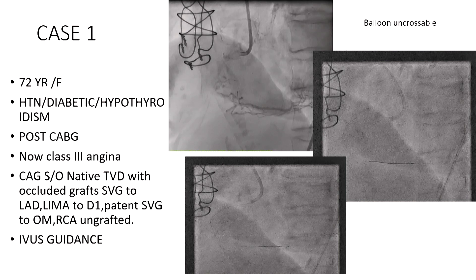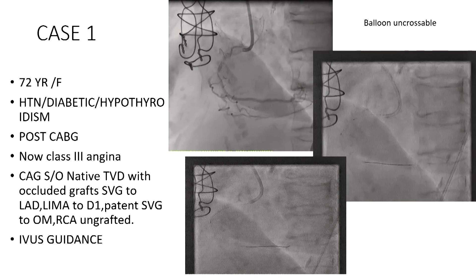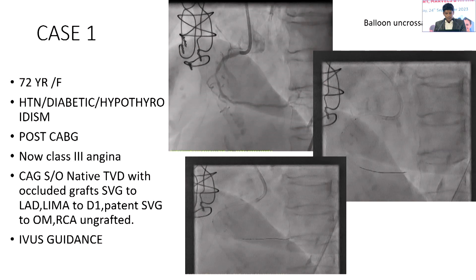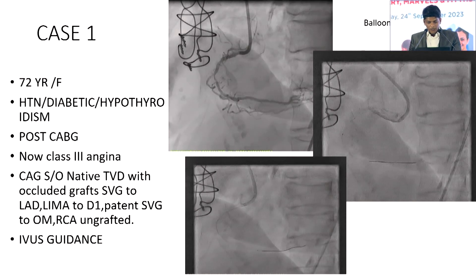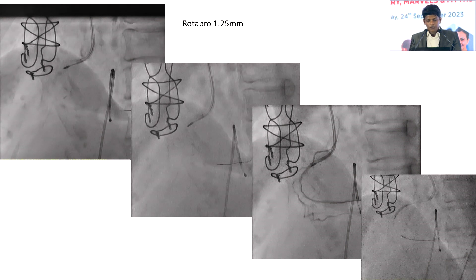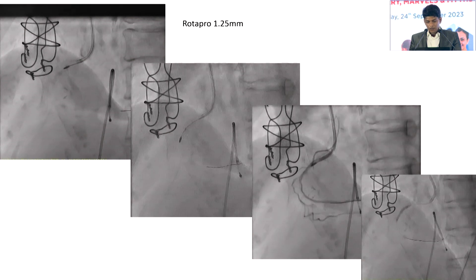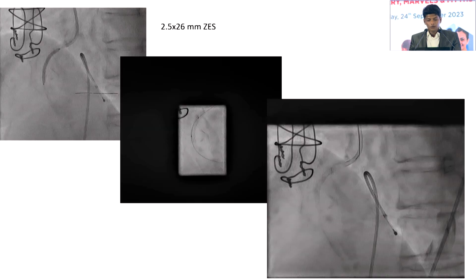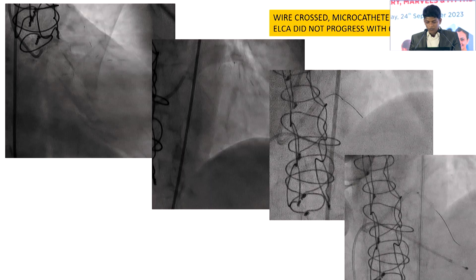Case 1: A 72-year-old female with multiple comorbidities and class 3 angina with calcified vessels. The balloon could not cross, so we took a microcatheter, placed a rota wire, and started with a 1.25 mm RotaPro burr. The burr advanced smoothly up to the middle of the lesion. After a check angiogram we dilated the balloon, placed a stent, and achieved uniform stent expansion with good flow in the vessel.